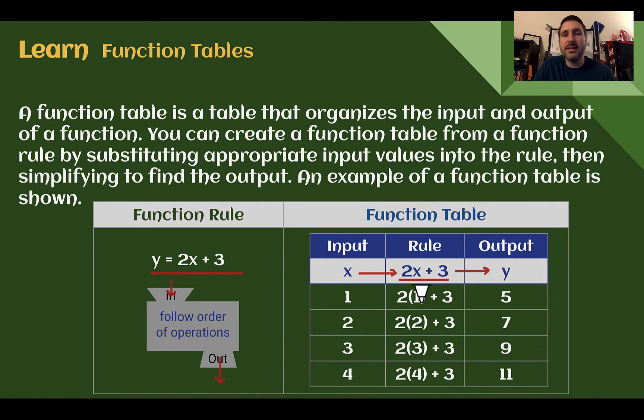You take your input, plug it into the rule, so here we substituted it in for x, used order of operations, so 1 times 2 is 2, add 3, we get 5. If we plugged in 2, we get 2 times 2, which is 4, add 3, we get 7. So we're just following the rule with order of operations by plugging in our input in order to get our output.